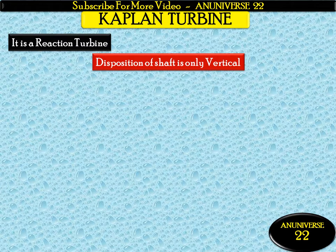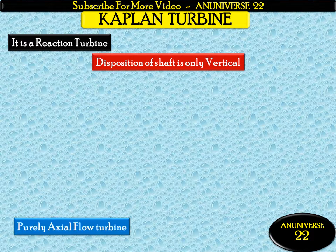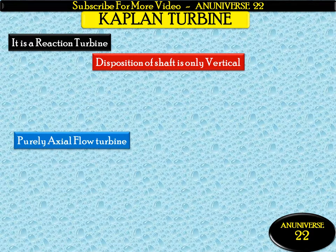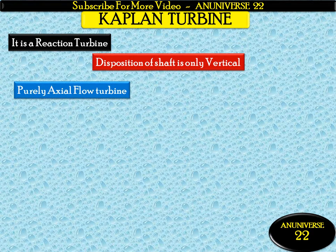The shaft of an axial flow reaction turbine is vertical, so the disposition of the shaft is only vertical here. It is a purely axial flow turbine. If water flows parallel to the axis of rotation of the shaft, the turbine is known as an axial flow turbine.